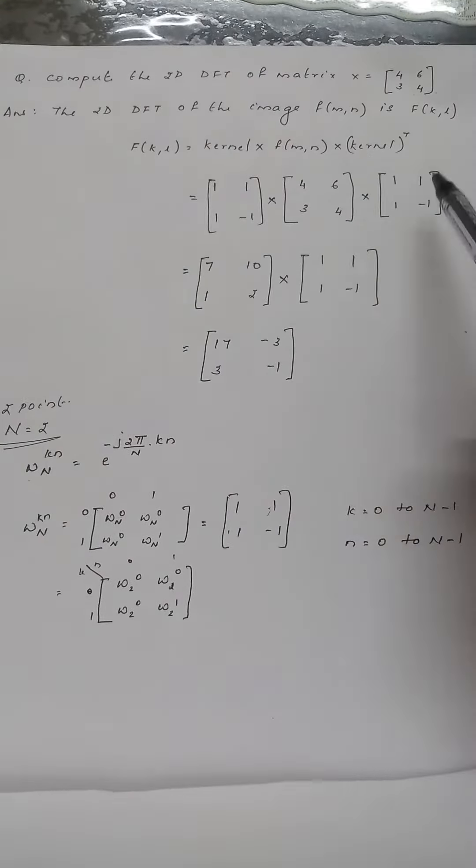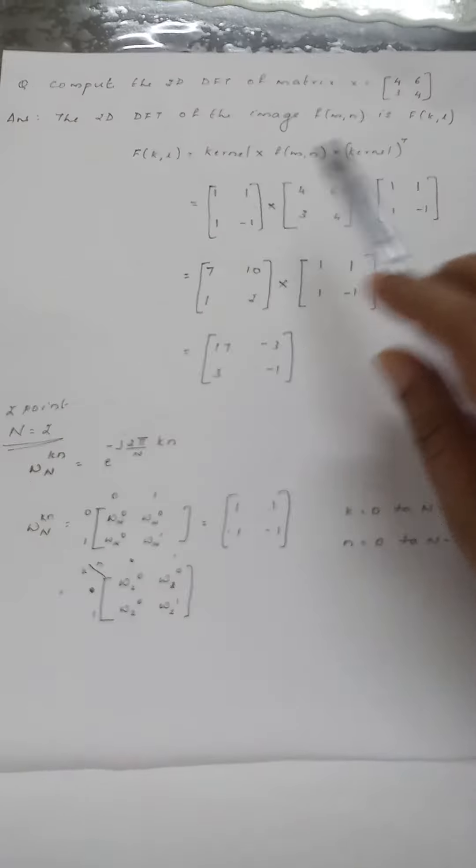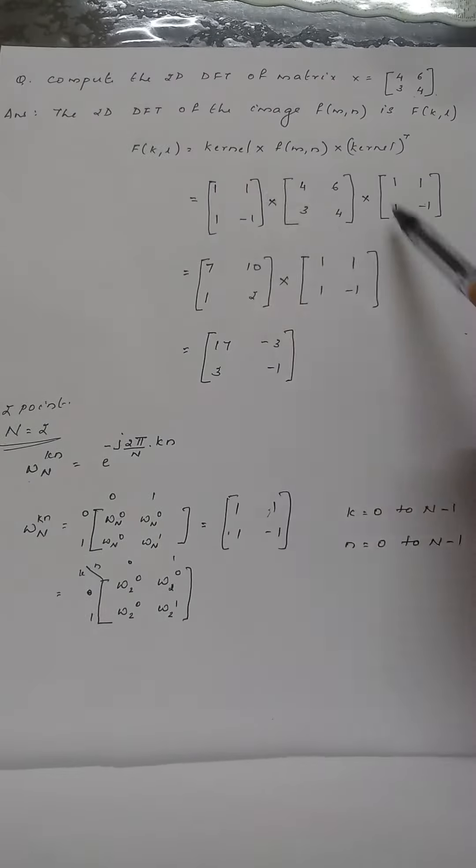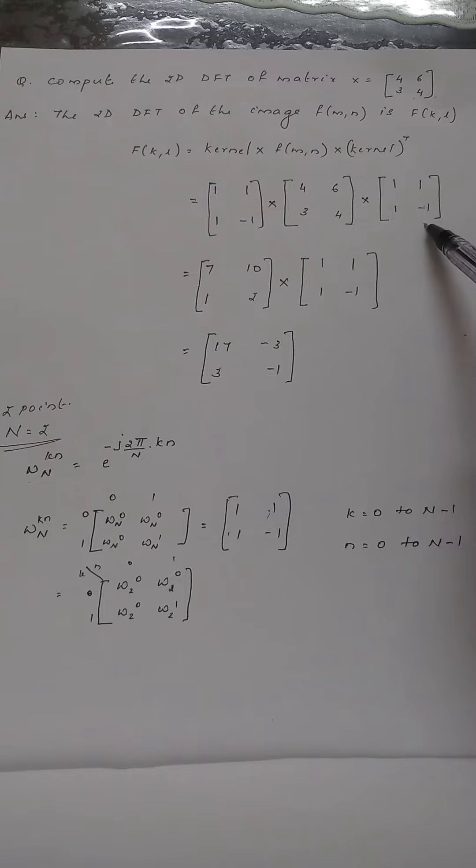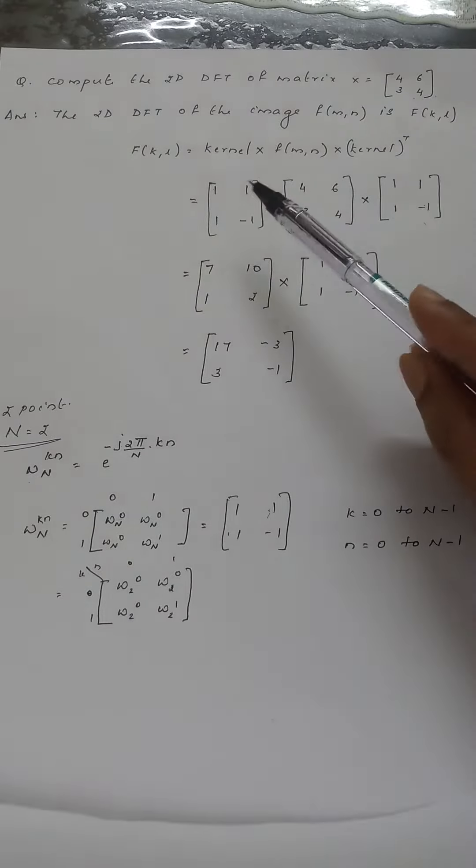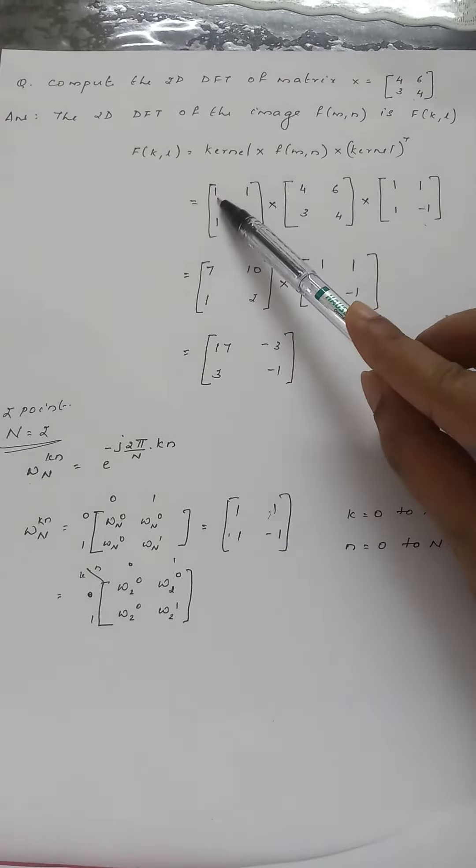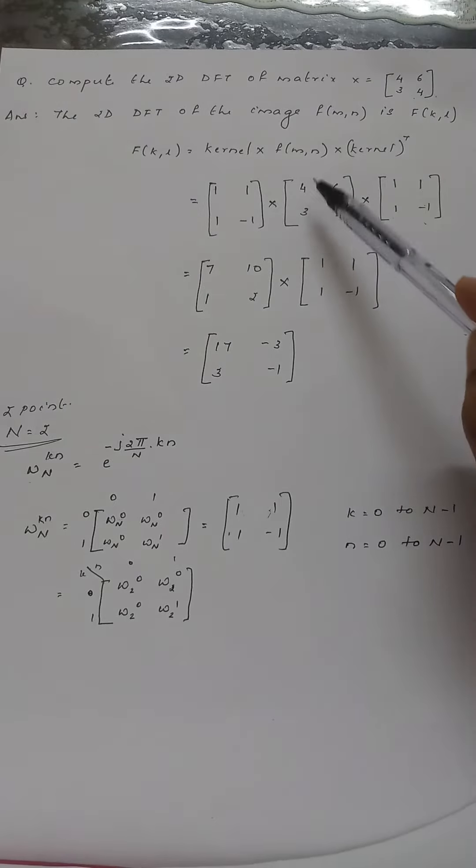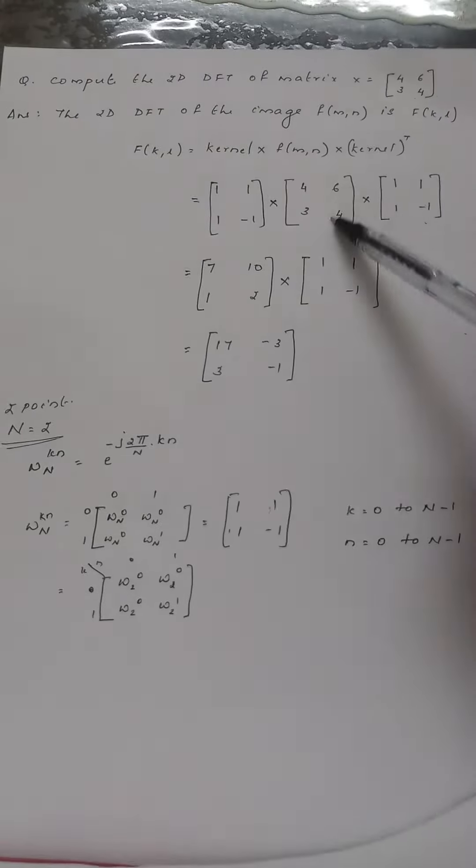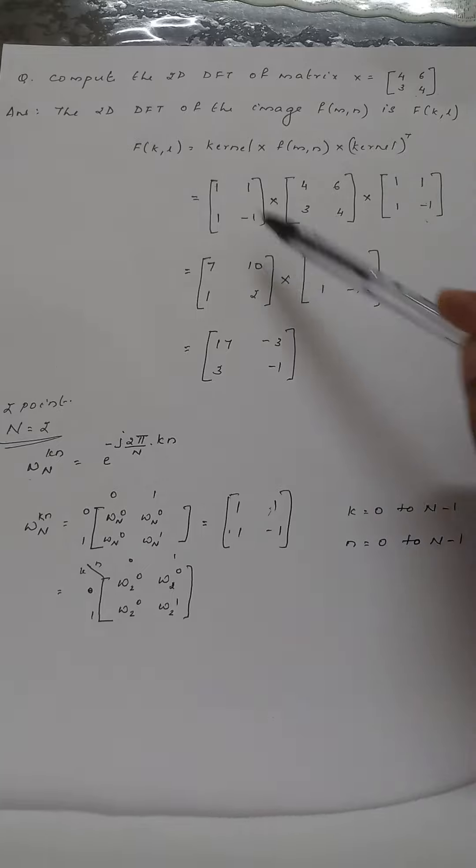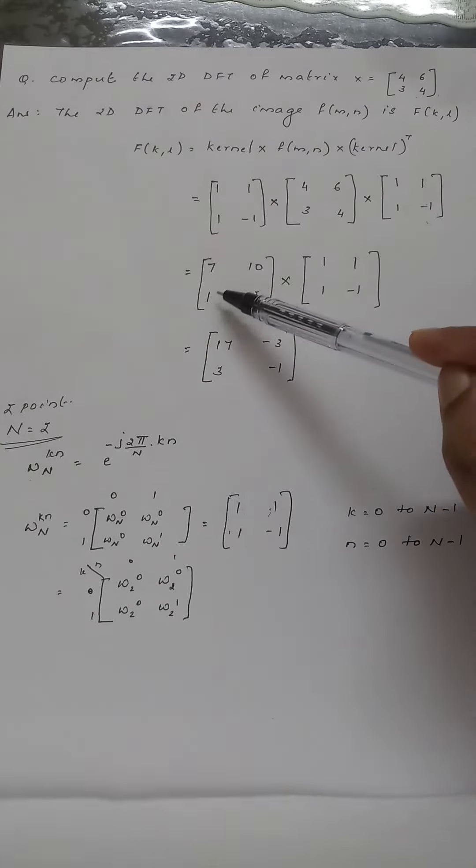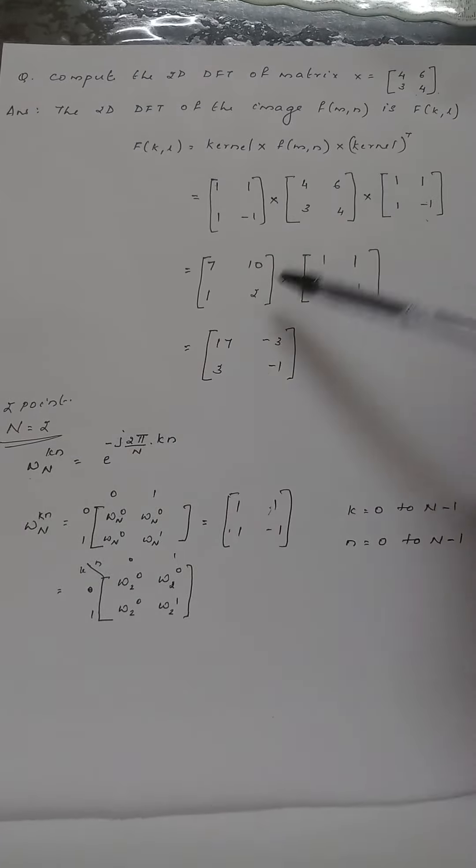Kernel times f(m,n) times kernel transpose - the transpose transforms rows to columns. Now we multiply: 1×4 plus 1×3 equals 7, 1×6 plus 1×4 equals 10, 4 minus 3 equals 1, and 6 minus 4 equals 2. This gives [7 10; 1 2].